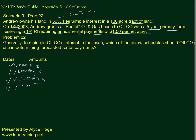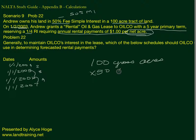The gross acreage is 100 acres, but we're only paying on the net acres. The net acres would be 100 gross acres times the lessor's 50% mineral interest, which equals 50 net acres. So the amount they would pay is one dollar per net acre, or fifty dollars every year.